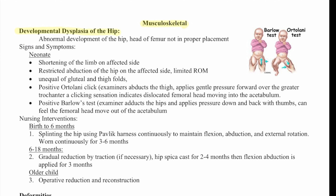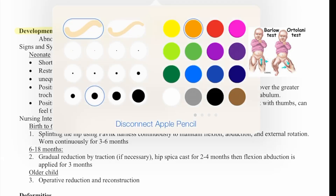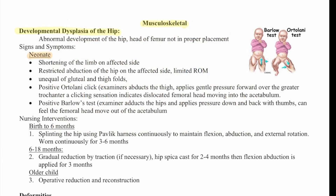Developmental dysplasia of the hips is an abnormal development of the hip — the head of the femur is not in the proper place. Signs and symptoms for the neonate include shortening of the limb on the affected side, restricted abduction of the hip on the affected side with limited range of motion, and unequal gluteal and thigh folds.